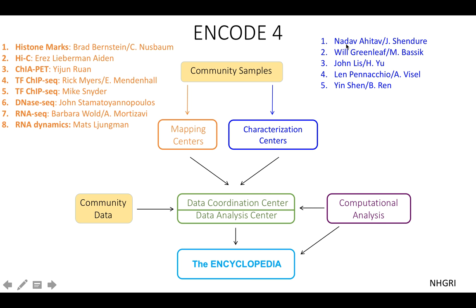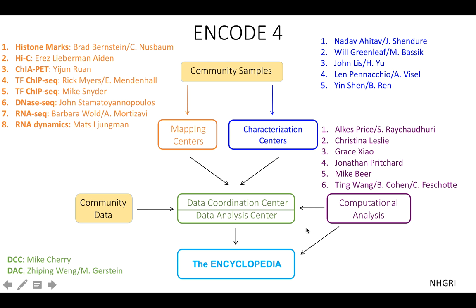The characterization centers include five groups, with three additional ones recently approved. I am co-leading the data analysis center with Mark Gustin from Yale, and the data coordination center is headed by Mac Cherry from Stanford. In addition to these centers, there are six computational analysis projects more loosely connected with data production for ENCODE 4.